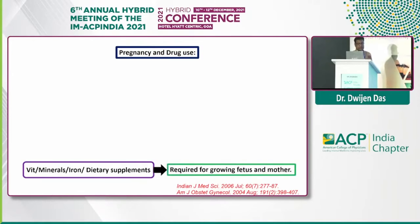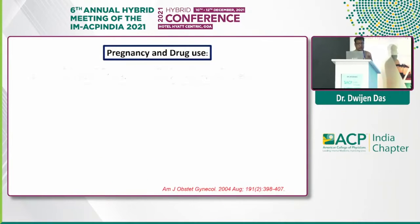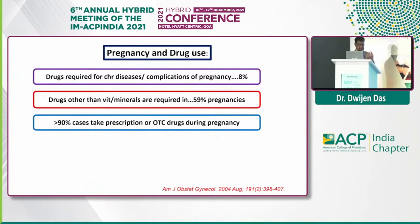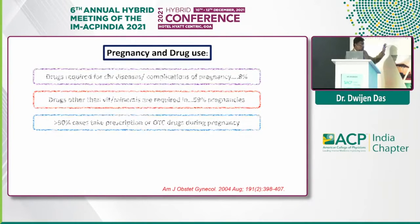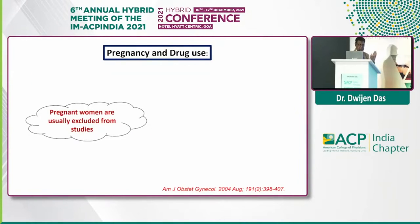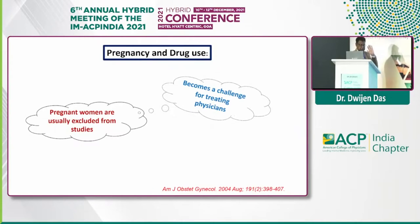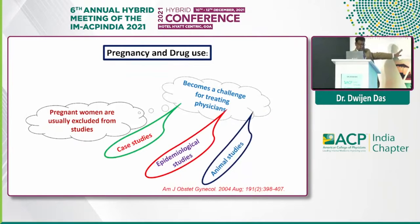Vitamins, minerals, iron, and dietary supplementations are necessary for the development of the growing fetus as well as the mother. Studies have shown that more than 90% of pregnant ladies are taking some drug, either in the form of prescription or OTC. This is a big concern. But what is more important is that in most randomized control trials, pregnant ladies are excluded from studies because of ethical issues. So we are in a difficult situation — once we need to prescribe, we don't have much evidence. The evidence we have is basically from some case studies, some epidemiological observational studies, and some animal studies. We don't have any randomized control trials.